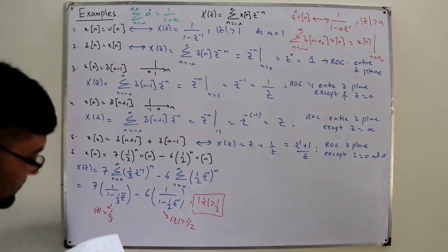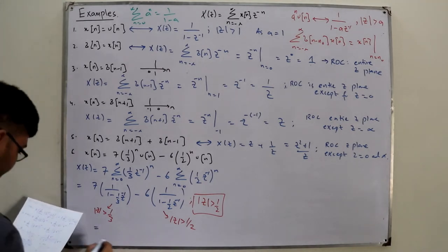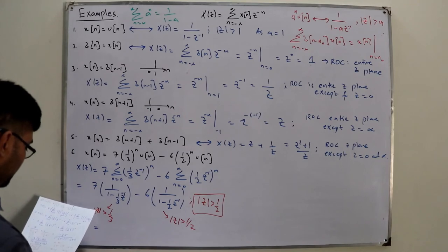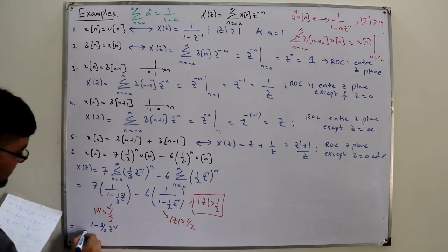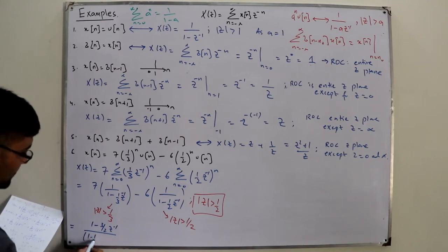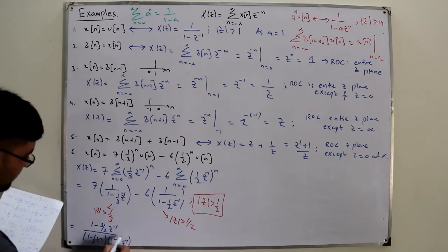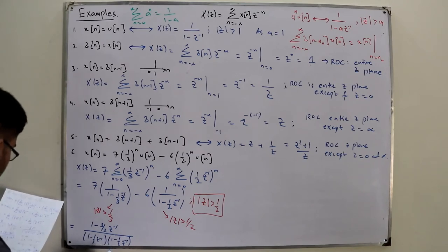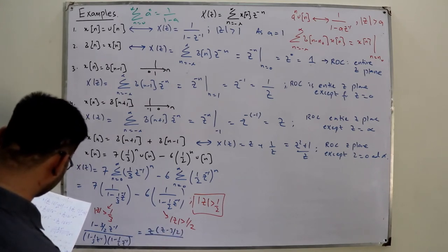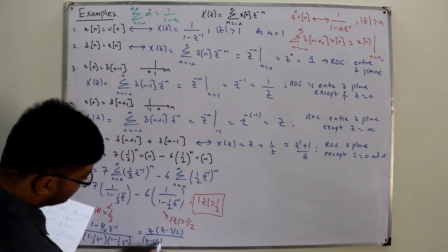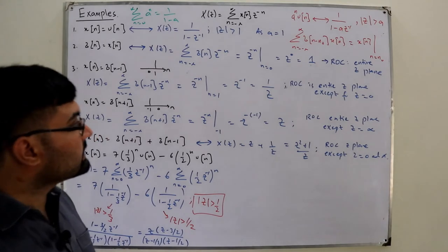You could further simplify: combining the two fractions gives a numerator of (1 − 3/2 · z⁻¹), over denominator (1 − (1/3)z⁻¹)(1 − (1/2)z⁻¹). In terms of z, this becomes z(z − 3/2) divided by (z − 1/3)(z − 1/2). The final ROC is |z| > 1/2.